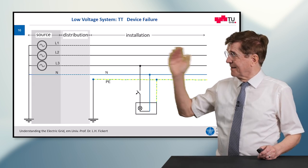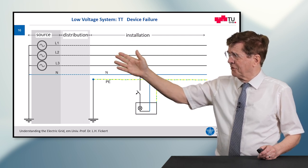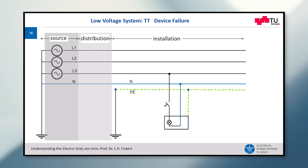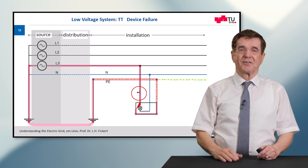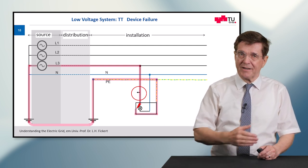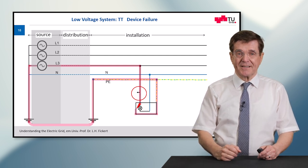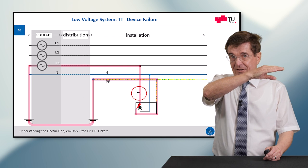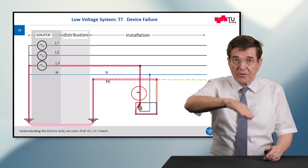Let's start with the TT system. The TT system is the oldest way to protect people against electric shock. You can see the TT system to my right side. We start from the source, go through the distribution network consisting of cables and overhead lines, and come to the installation — the place where we live, work, and handle energized apparatus like a toaster or a motor, which can be dangerous. We energize the toaster, the yellow light goes on, and then there is a fault inside. The live wire touches the metal casing for whatever reason.